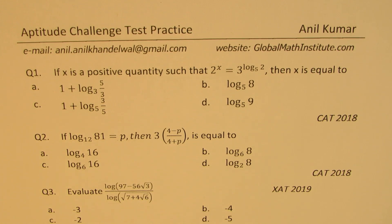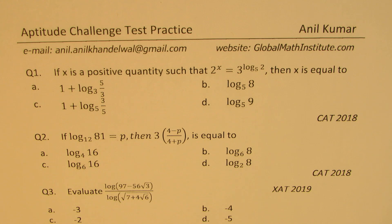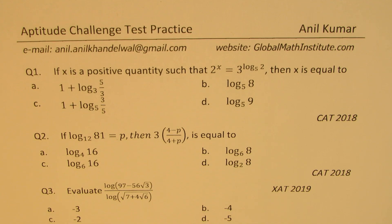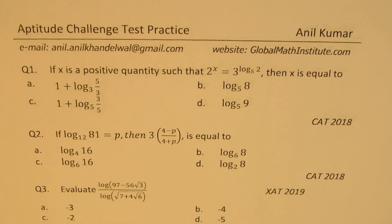Those two have come in the combined examination aptitude test. Question number three is to evaluate log of (97 minus 56 square root 3) over log of square root of (7 plus 4 square root 3). That's from Xavier aptitude test 2019. We have a very similar question in our list. More than one concept is used to solve these questions, so their solution will definitely help you prepare for such tests. Let's now take up their solutions.